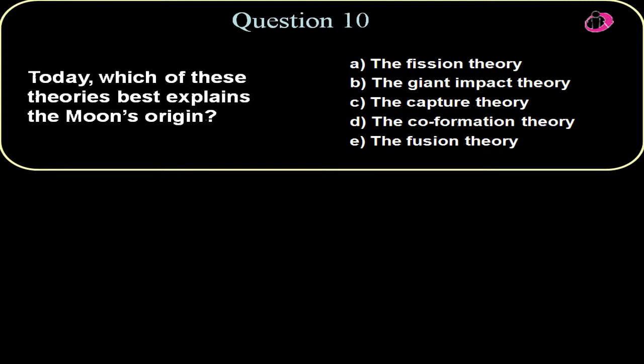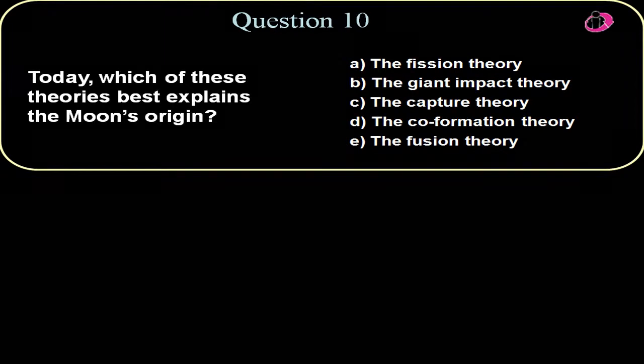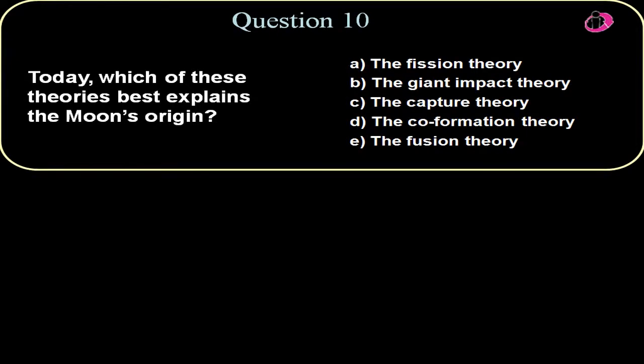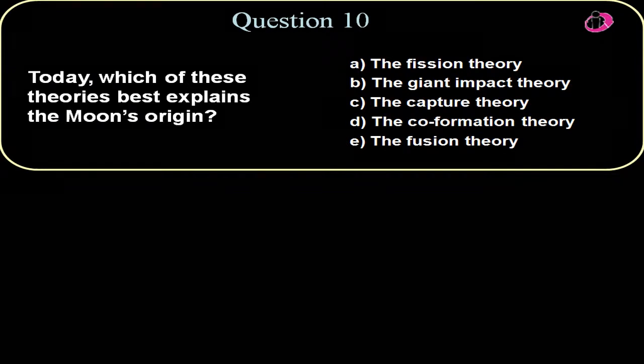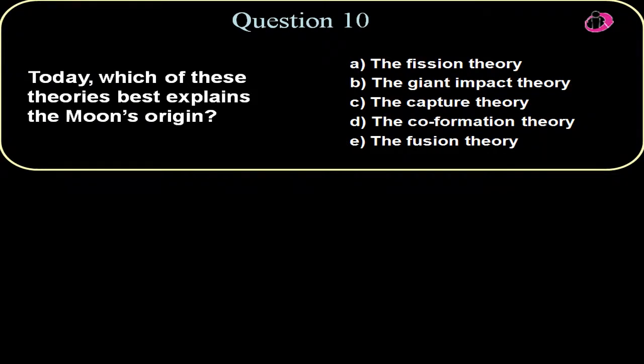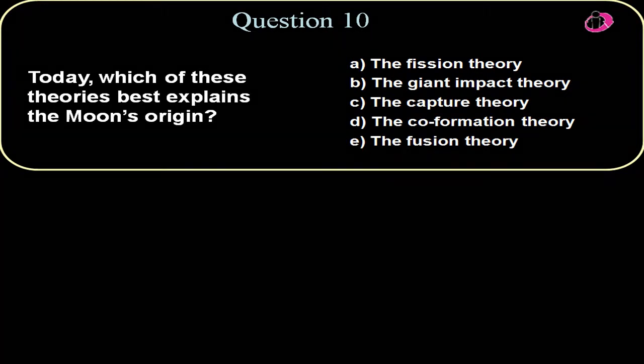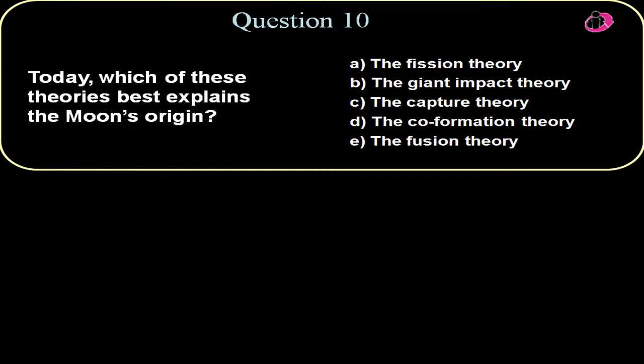Question number ten, today which of these theories best explains the moon's origin? The fission theory was that the moon just kind of fused or fissioned out of the Earth. The Earth had formed and then like out of Adam's rib, it's like the moon came out of the Earth. That sort of has been negated by the fact that the moon would have too much spin, too much angular momentum, and it doesn't have that.